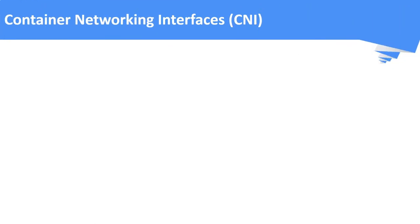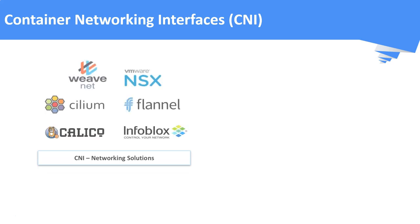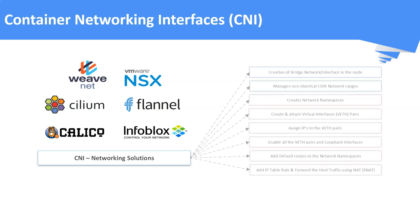There are many third-party vendors available to provide container networking solutions. To name some: Calico, Cilium, Weave Networks, VMware NSX, etc. These plugins may slightly vary in their features, but all of them satisfy the core functionality required for Kubernetes networking.